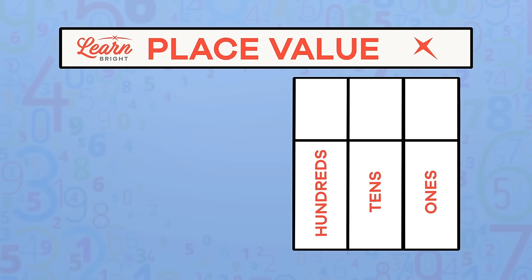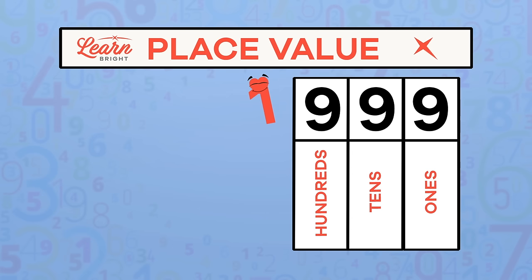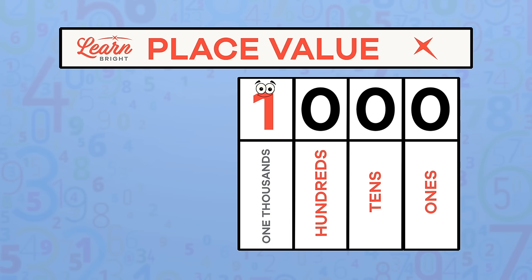The largest three-digit number we have is 999. The next number is 1000, and has four digits. Can you guess what the next place value is named? Did you say one thousands? Great job!